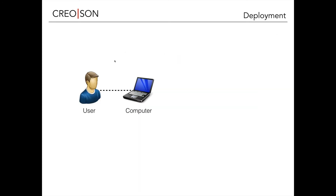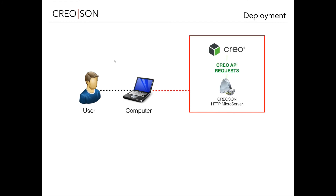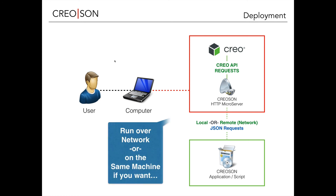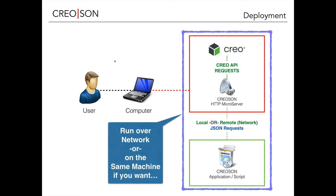The deployment of a Creoson HTTP server and application is really flexible. You can take the minimum requirements for Creo and the microserver that connects to it, and it's just a question of where you want your application or script to run — on a local machine or a remote machine. Everything happens with JSON requests. The beauty is that you can run it locally, over a network, or on the same machine.